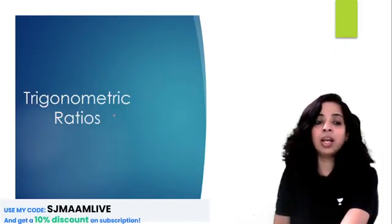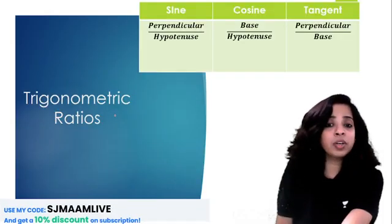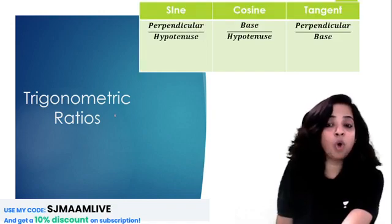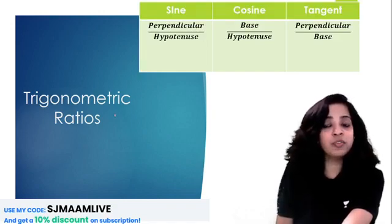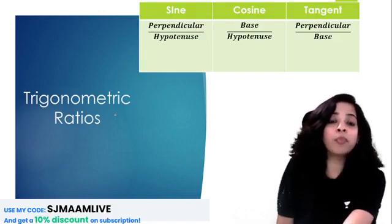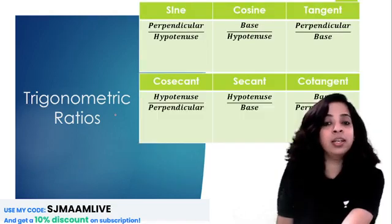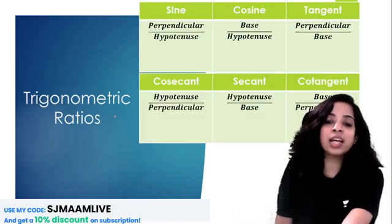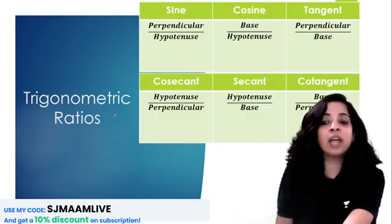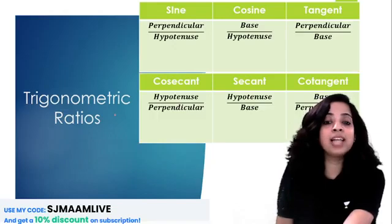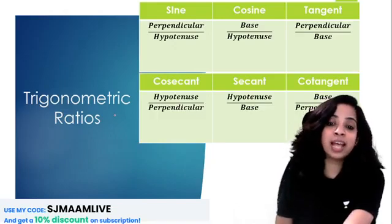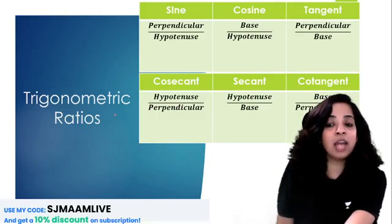Now, how many trigonometric ratios are there? There are sine, cosine, and tangent — commonly called sine, cos, and tan — and we also have cosecant, secant, and cotangent, which we call cosec, sec, and cot.